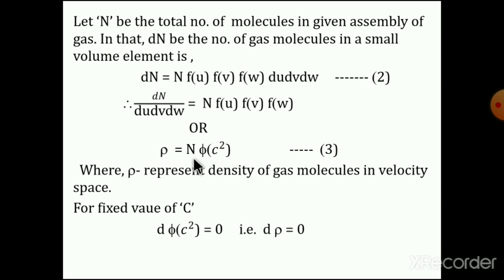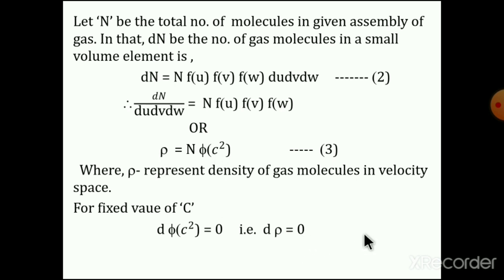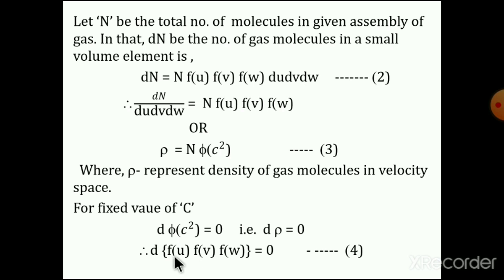The density of the gas molecule in the velocity range is given by equation 3: ρ = N·φ(c²). We simplify this equation for a fixed value of the velocity. Therefore, we differentiate φ(c²); since c is constant, the derivative is 0. And if this derivative is 0, the derivative of the density term becomes 0. That means the derivative of f(u)·f(v)·f(w) must equal 0 — this we call equation number 4.